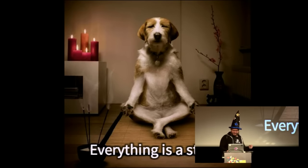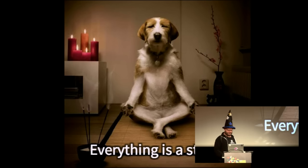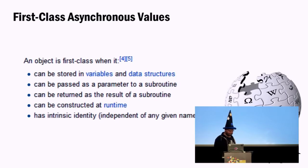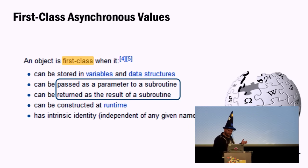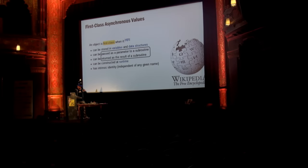Everything's a stream. Your mouse is a stream. Your phone's input is a stream. It's a zen-like moment when you realize that. Instead of callbacks with the subject-observer pattern, we now have a first-class object that we can filter, reduce, inject into methods, and return from methods — which is great for testing.